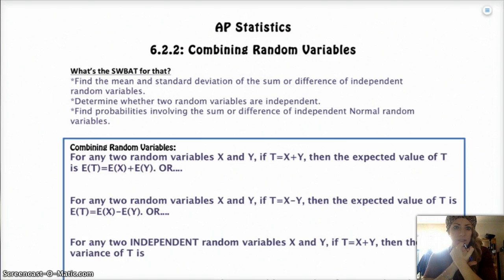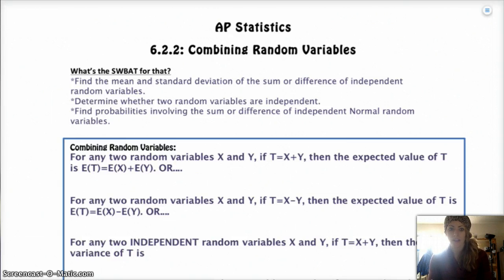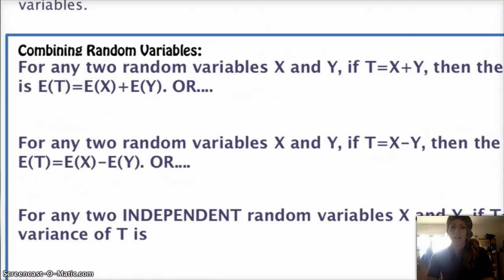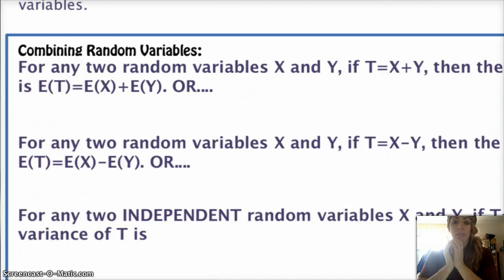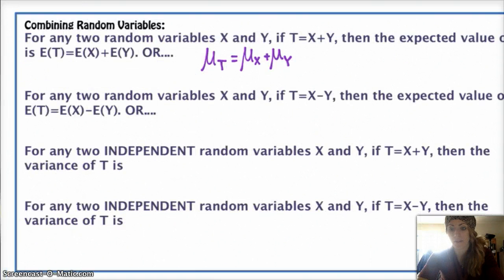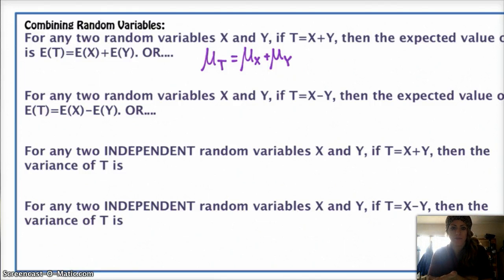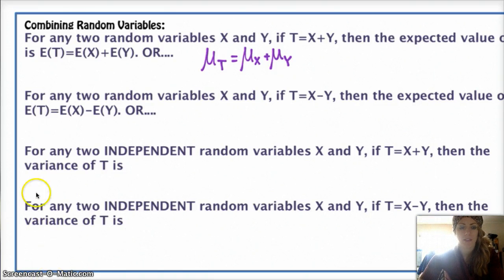So, combining random variables. If you have two separate random variables, say X and Y, and T is the combination of the two — X plus Y — then your new expected value of T is just the combination of the means. So basically, if I have two distributions with different means and I want to add them together, the mean of the new distribution is just the means added together. Similarly, if I'm taking two random variables and subtracting them, the mean of the new distribution is just the difference of the means of the two original distributions.